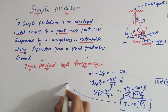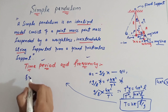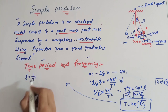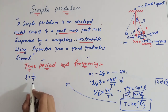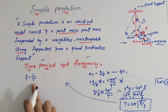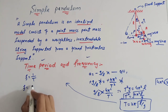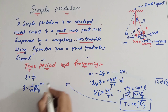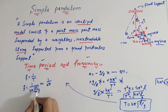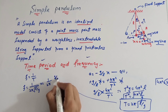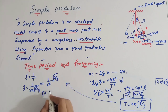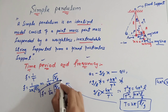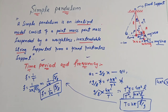اب frequency کے لیے equation نکالتے ہیں۔ f = 1/T، تو T کی جگہ 2π√(l/g) put کرو: f = 1 / (2π√(l/g))۔ اس کو اس طرح بھی لکھ سکتے ہیں: f = (1/2π)√(g/l)۔ Frequency depend کرتی ہے g پر اور length of the string l پر۔